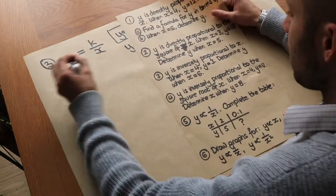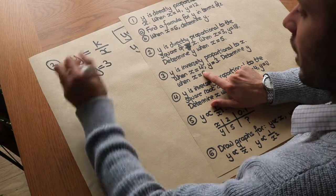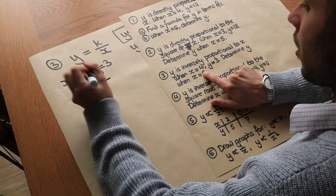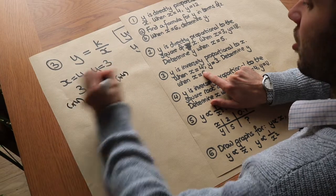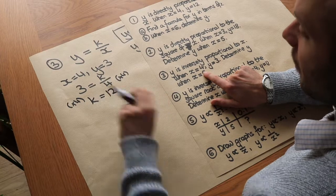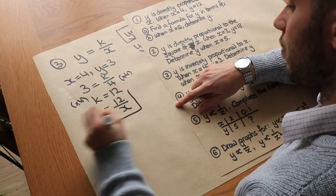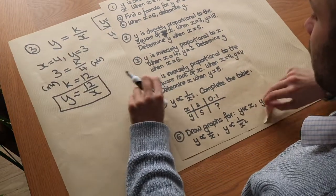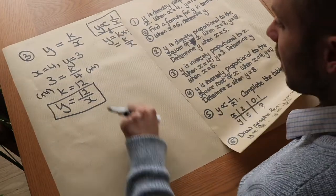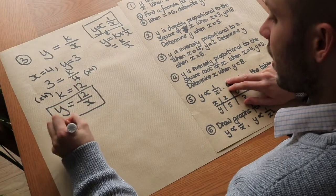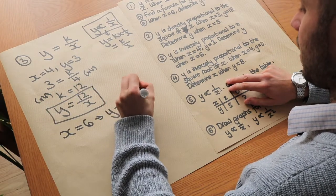Using our values: when x equals 4, y is 3. Substituting: 3 equals k over 4. Since k is being divided by 4, we multiply both sides by 4, giving k equals 12. So our complete formula is y equals 12 over x. Using that to find y when x is 6: y equals 12 over 6, which equals 2.